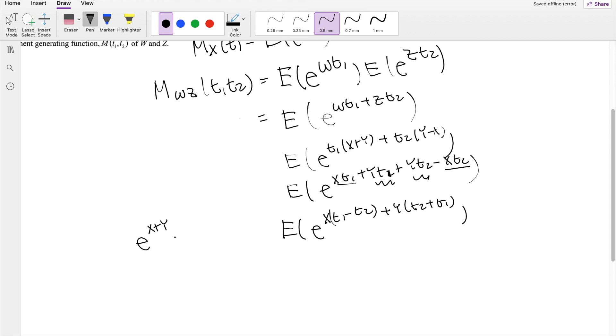Okay, and then by the definition of just adding these, we know that this is equal to E to the X times E to the Y. So we can split them up. E to the value of E to the (T1 minus T2)X, times E to the (T1 plus T2)Y.